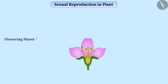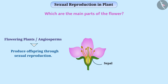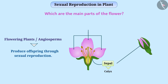Flowering plants, also called angiosperms, produce offspring through sexual reproduction. The reproductive organs of these plants are found in flowers. The outer part of the flower which looks like green leaves is called a sepal. Together, the sepals form the calyx. The sepals protect the inner parts when the flower is in the form of a bud. The colorful parts of the flower that look like leaves are called petals, and all the petals together are called the corolla.